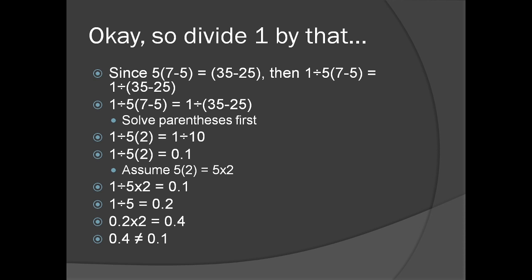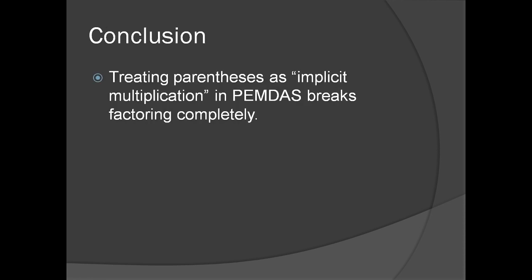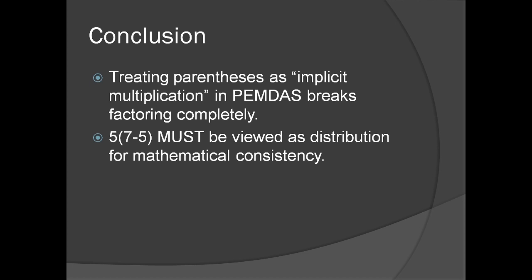What does that mean? Following the rules of PEMDAS here breaks factoring completely. This is why we cannot treat 5(7-5) as if it's just implicit multiplication. We have to treat it as it really is, as distribution.